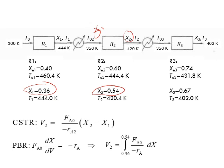What if it was a packed bed reactor? We can use the design equation for the packed bed reactor; if you want the volume, it looks like the plug flow reactor. So we write: V2 = integral of FnA0 / (-rA) dX, with limits from X1 = 0.36 all the way to X2 = 0.54.